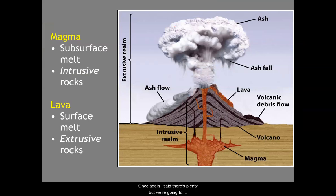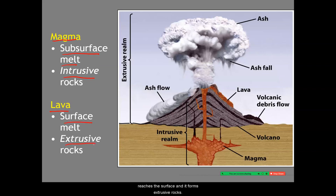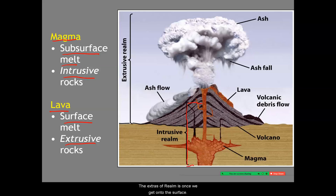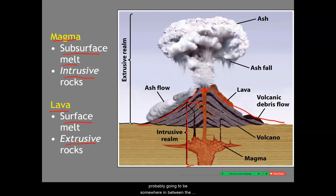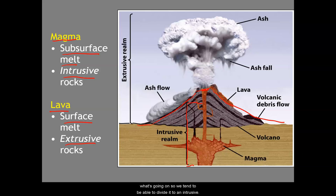Magmas are subsurface molten material and form intrusive rocks. Lava is what we call it once it meets the surface, and it forms extrusive rocks. On a volcano, the intrusive realm is everything still mostly underground, and the extrusive realm is once we get onto the surface. The rocks that form right at the transition are probably going to be somewhere in between — maybe porphyries or very fine-grained but still with visible crystals. Geology is full of those in-between things, but we can generally divide conditions into an intrusive and extrusive set.